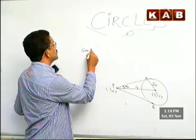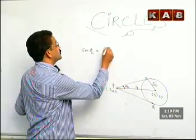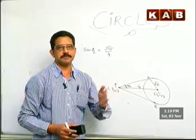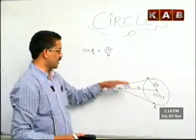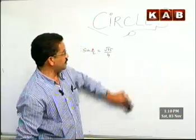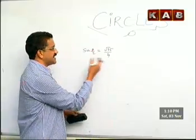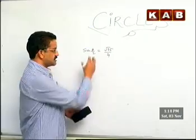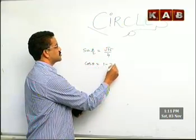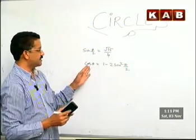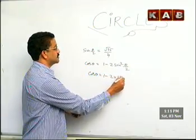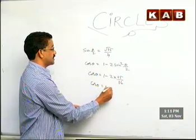Now sin(θ/2) = opposite side AC / hypotenuse PC = √15 / 4. But I don't want θ/2, I want θ. I must get θ from this using a formula. Using cos θ = 1 − 2sin²(θ/2), we have cos θ = 1 − 2 × (15/16) = 1 − 15/8 = −7/8. Therefore θ = cos⁻¹(−7/8).